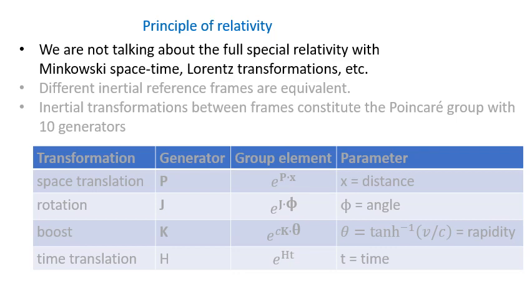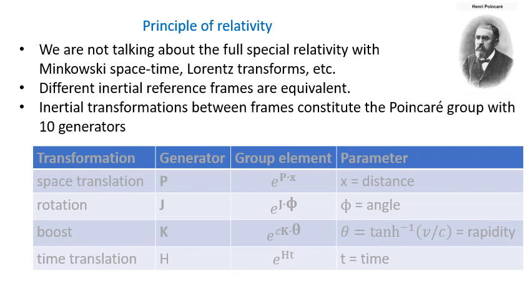Now turning to the second foundation of Weinberg's approach, which is the principle of relativity. It is important to note that we don't need the full special relativity — we only need its first postulate regarding the equivalence of inertial reference frames. The set of transformations between different inertial frames forms a group whose structure is well known: this is the ten-dimensional Poincaré group. Its elements depend on continuous parameters, so it belongs to the category of so-called Lie groups.